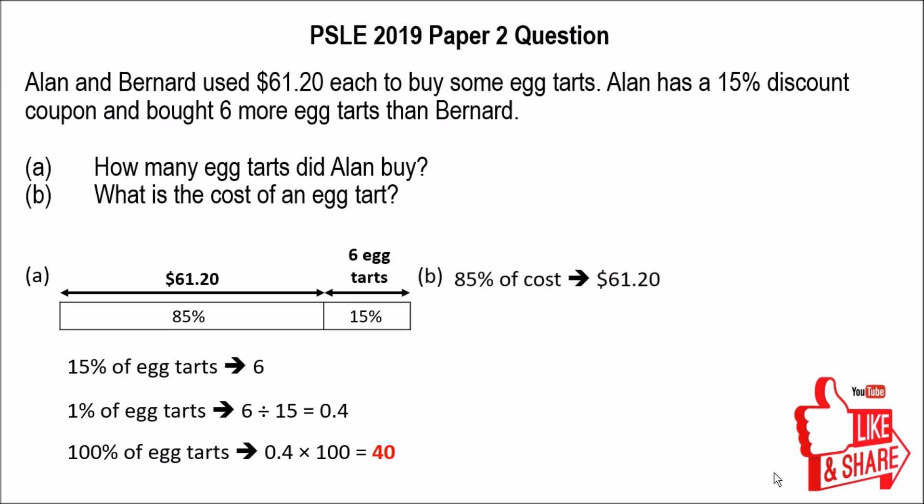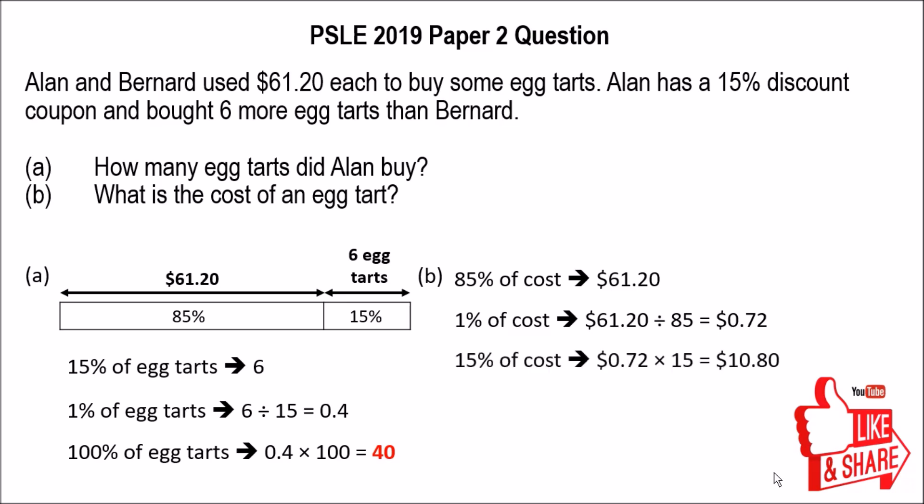Now for Part B, we know that Alan paid 85% of the total cost for the egg tarts, and 85% of the cost was $61.20. So 1% of the cost would be $61.20 divided by 85, which equals $0.72. Then we find 15% of the cost because we know the 15% represents 6 egg tarts. So 15% would be 0.72 times 15, which gives $10.80 — meaning 6 egg tarts cost $10.80. Therefore, 1 egg tart is $10.80 divided by 6, which equals $1.80. That's the final answer for Part B.